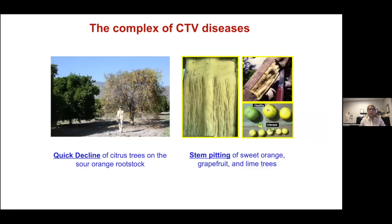CTV causes two types of disease. The first is quick decline, which is essentially the death of citrus trees grown on sour orange rootstock. The second is stem pitting, which affects sweet oranges, grapefruit, and lime trees irrespective of the rootstock, and results from abnormal vascular development induced by the virus.